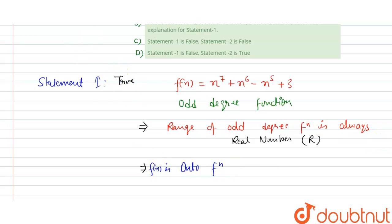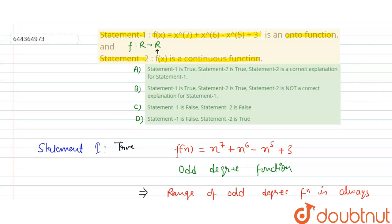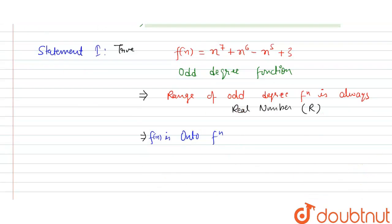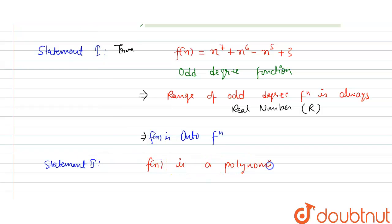Now for Statement 2, which says f(x) is a continuous function. Since f(x) is a polynomial function, and all polynomial functions are always continuous, f(x) is indeed a continuous function.